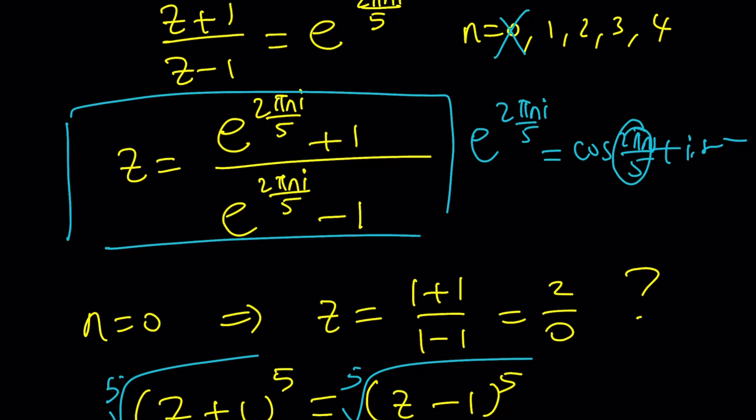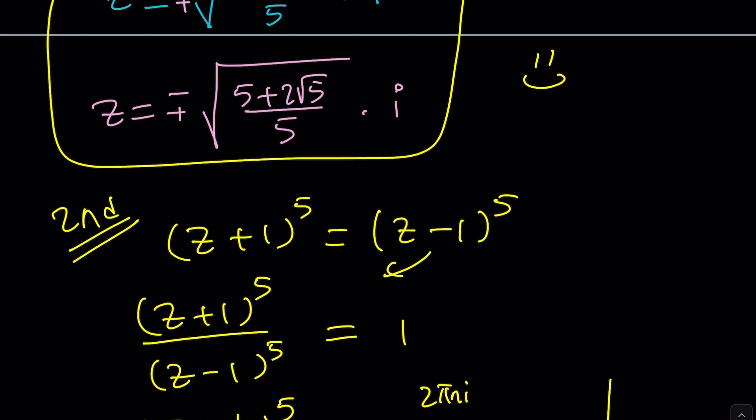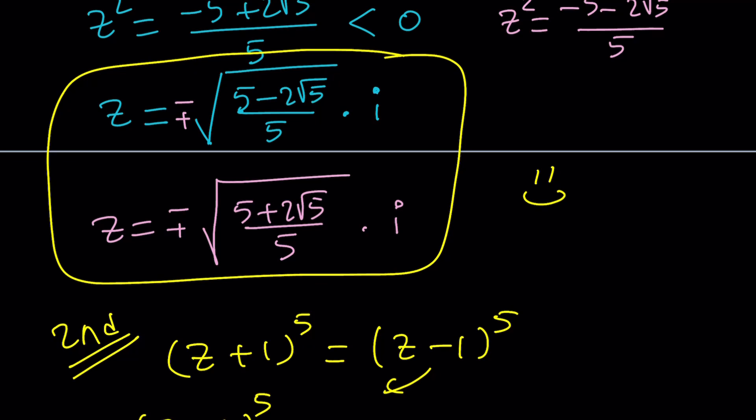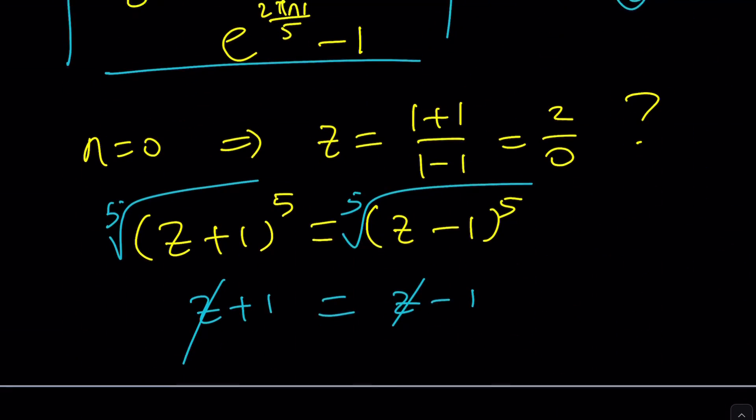And what is 2 pi over 5? If you replace n with 1, it is 72 degrees. Therefore, it gives us these interesting radicals with square root of 5 and all that stuff. Okay, let's quickly talk about the third method and we'll finish up with that.